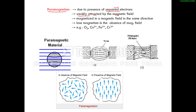When placed in an external magnetic field, paramagnetic substances are attracted toward it. In the diagram, the magnetic lines are shown attracting toward the paramagnetic material — compared to vacuum where nothing deflects the lines. These substances are magnetized in the same direction as the magnetic field, and as soon as the external field is removed they lose their magnetism. Examples include O₂, which is paramagnetic because it has unpaired electrons in its anti-bonding molecular orbitals.